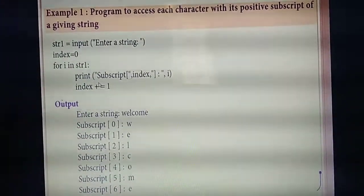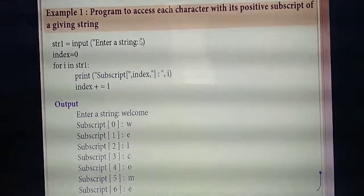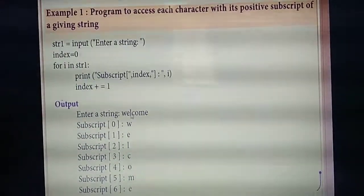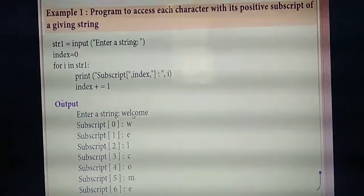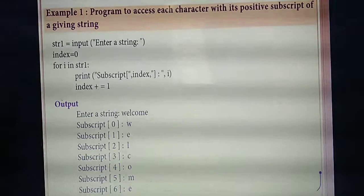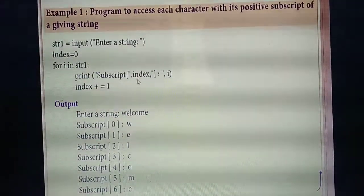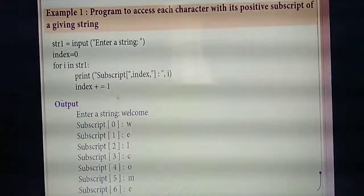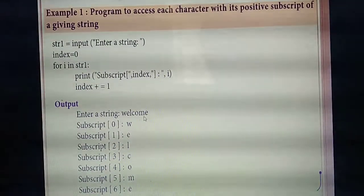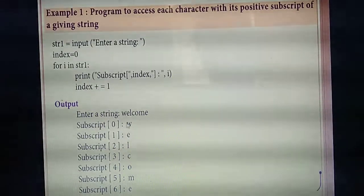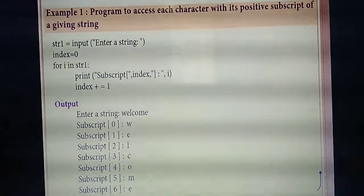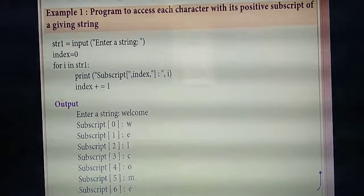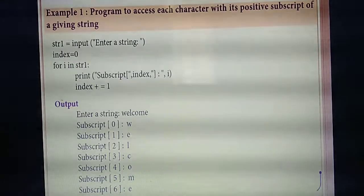Once you declare or define a string inside the program, you cannot modify or delete it. But you can modify a string by adding a new string. See this example: I have declared variable str1 with the string 'once and how are you'. In the next line, str1[0] means you are trying to add character 'a' at index position zero. But since strings in Python are immutable, if you run the program you will get an error: the string object does not support item assignment.